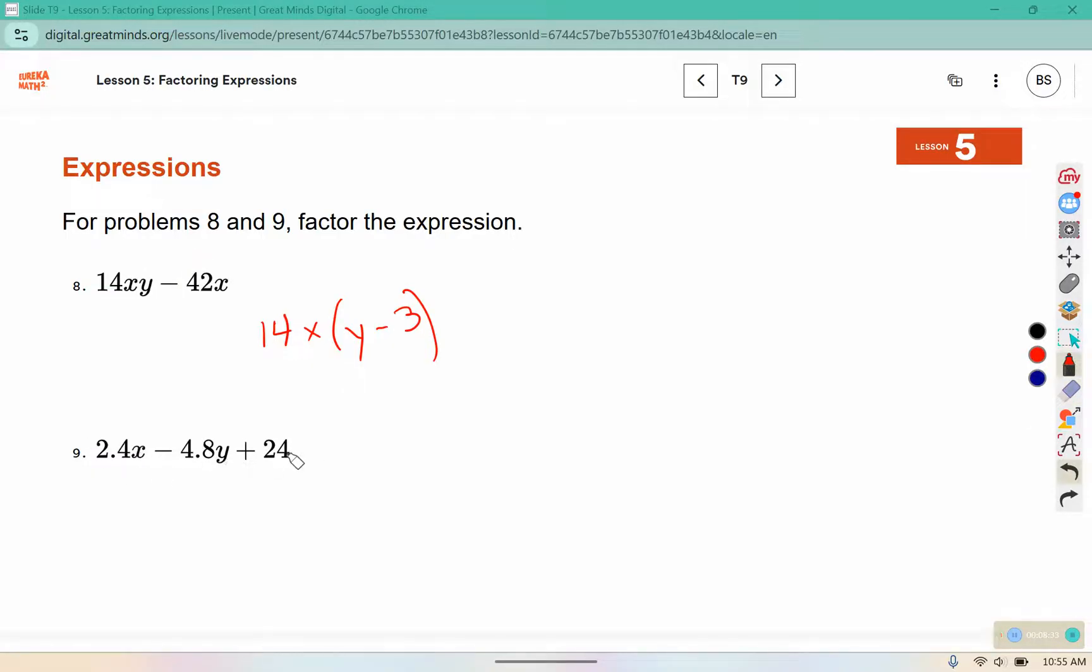In number 9, they don't have any variables in common, but we can take out a 2.4. 2.4 times x gives me 2.4x. 2.4 times negative 2 would give me negative 4.8, and we need that y. And 2.4 times 10 would give us 24.